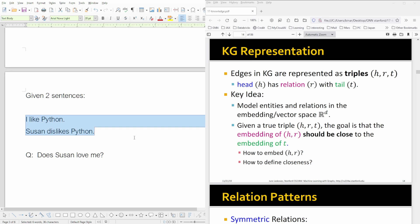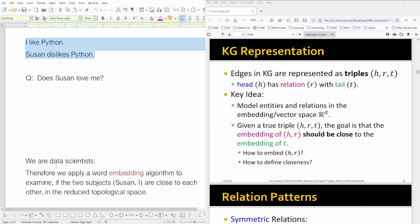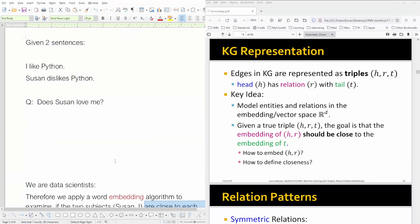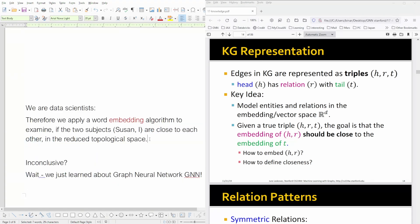So what is the solution to this problem? Now we are data scientists, we are therefore applying a word embedding algorithm to examine if the two subjects, this would be Susan and I, are close to each other in the reduced topological space because we take each word and we do an embedding of each word to find out about the closeness of two words.